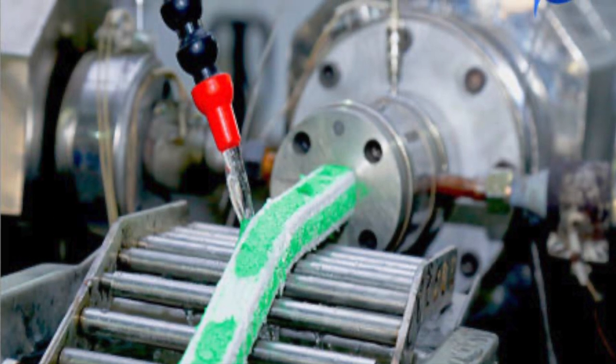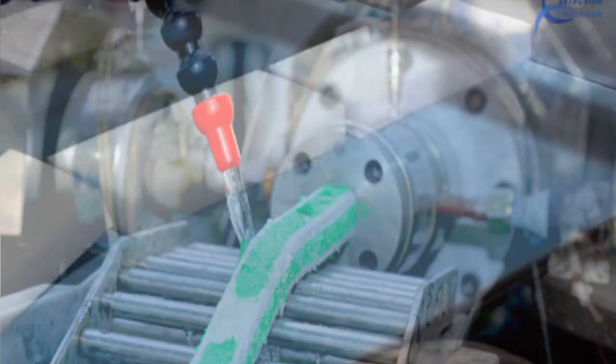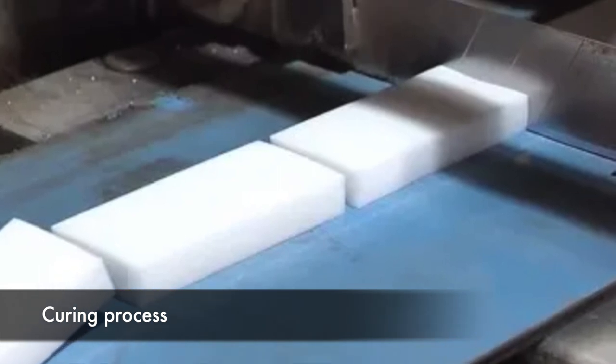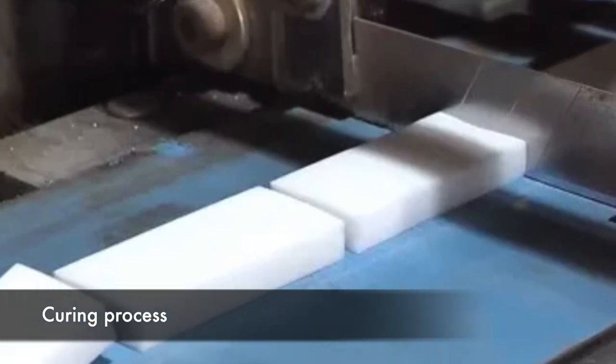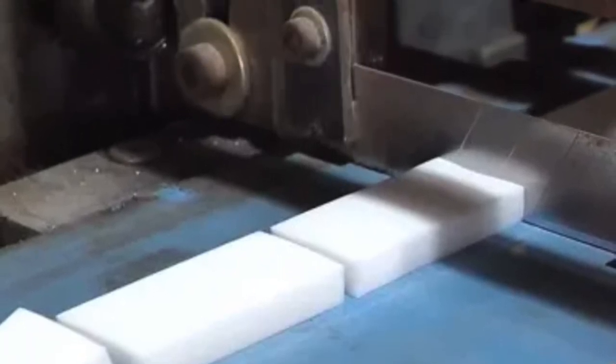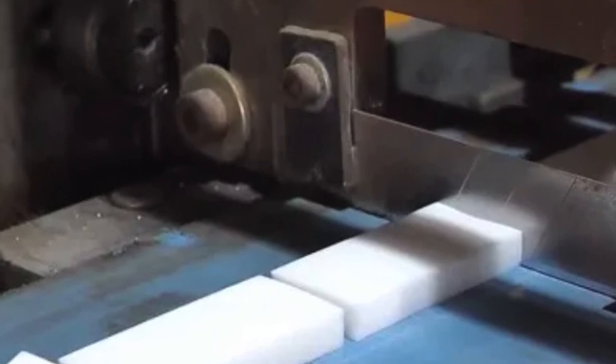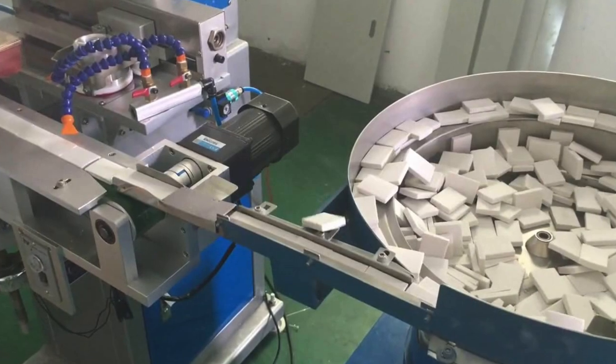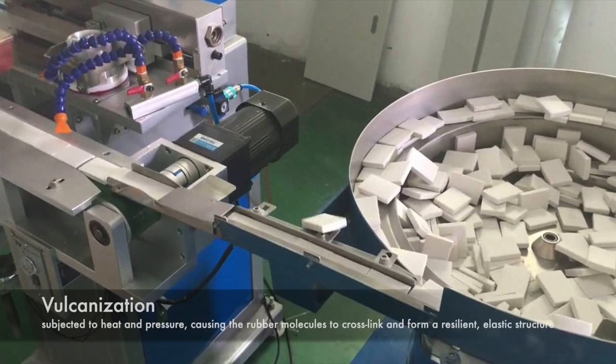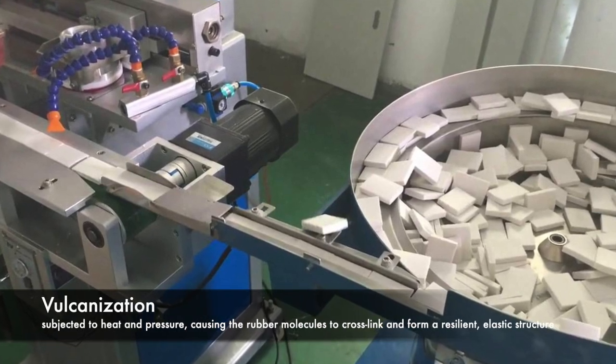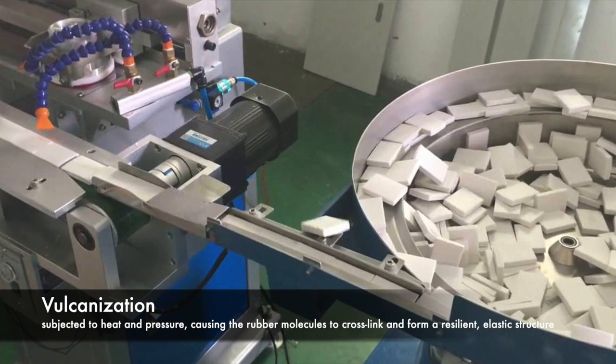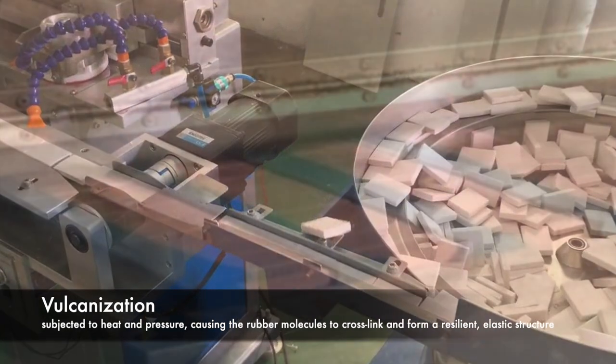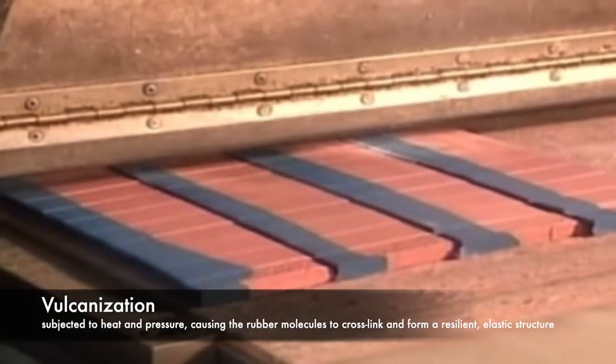After molding, the erasers undergo a curing process to enhance their durability and erasability. This is typically achieved through vulcanization, a chemical process that strengthens the rubber. During vulcanization, the erasers are subjected to heat and pressure, causing the rubber molecules to cross-link and form a resilient, elastic structure. This step is crucial for ensuring that the erasers maintain their shape and performance over time.